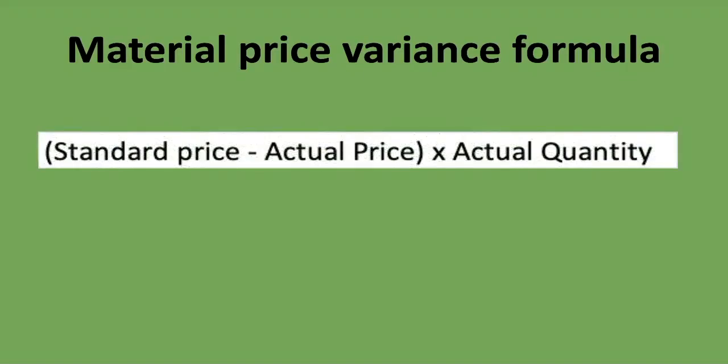Now, what is the formula for the material price variance? Here it is — it's very simple: it's the standard price minus the actual price, multiplied by the actual quantity. You do whatever is in brackets first — standard price minus actual price — get that answer, and then multiply it by the actual quantity. Pay very careful attention to the order.